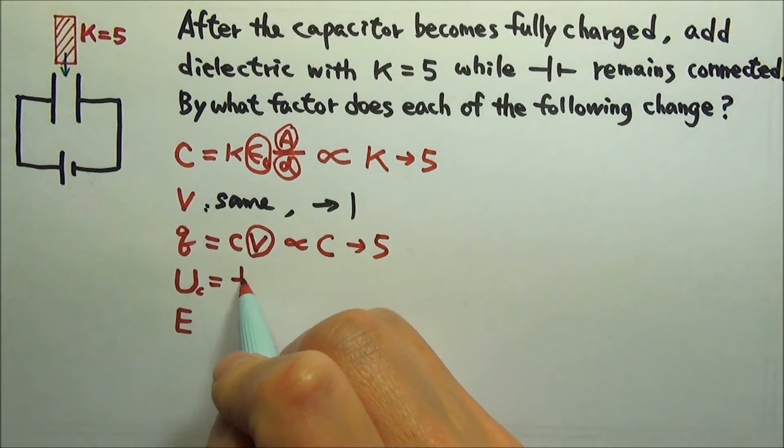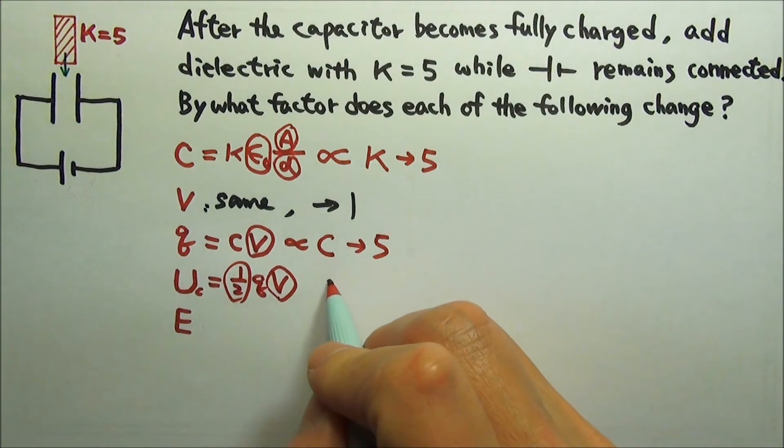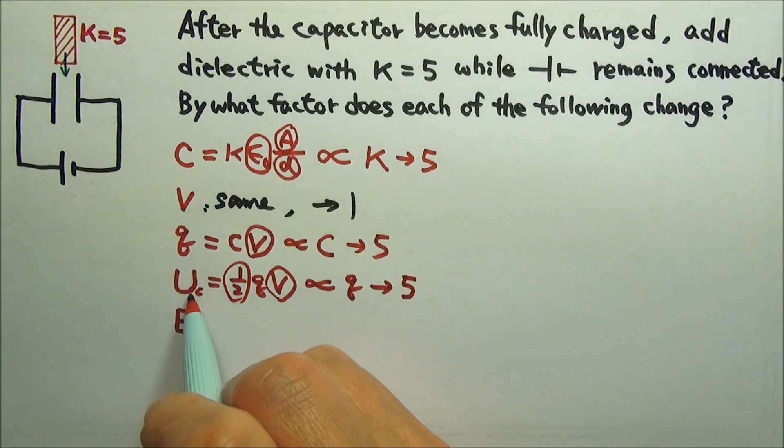U equals one-half QV. One-half is a constant, and the voltage also stays the same. So this is proportional to Q, and the Q changes by a factor of 5. So the energy stored in the capacitor changes by the same factor 5.